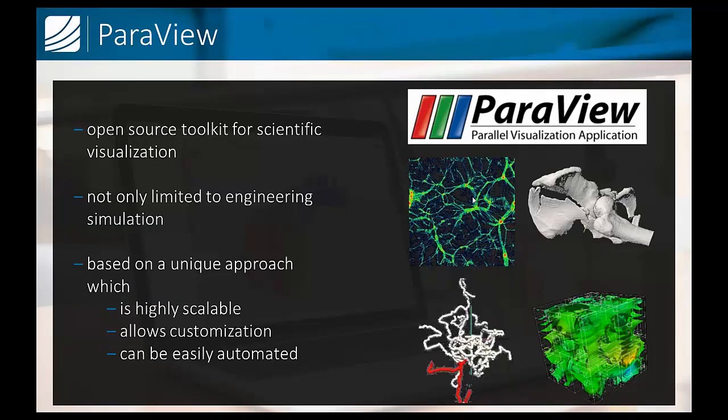In order to do that, we'll be using a tool. We always need a tool to perform this kind of action. And our choice will be ParaView, the parallel visualization application, which is an open source toolkit for scientific data processing. And it's getting more and more recognition within the industry itself, just because it's based on a unique approach that allows for customization, can be easily automated, and has a highly scalable nature itself.